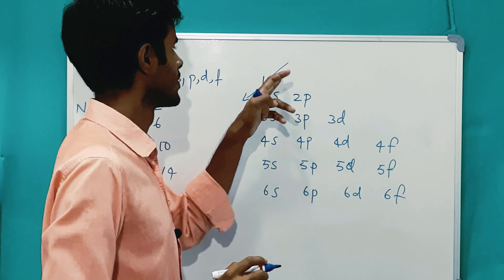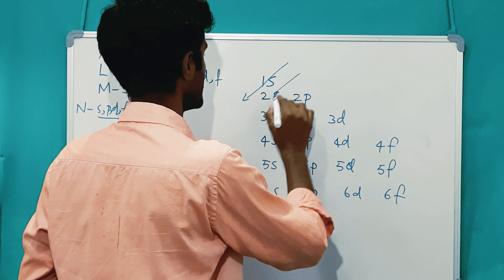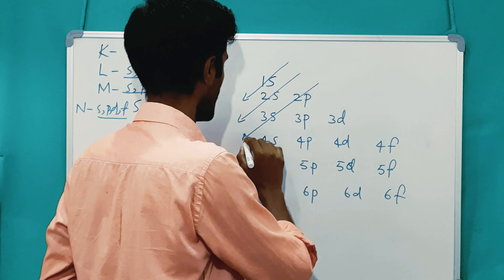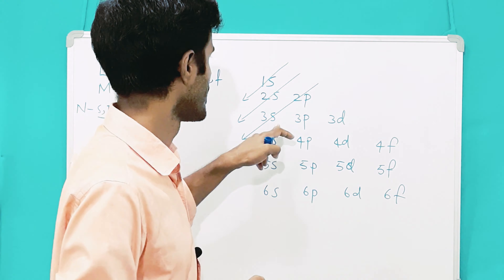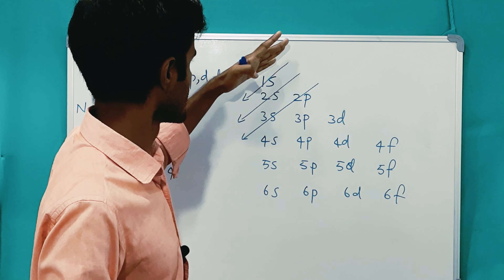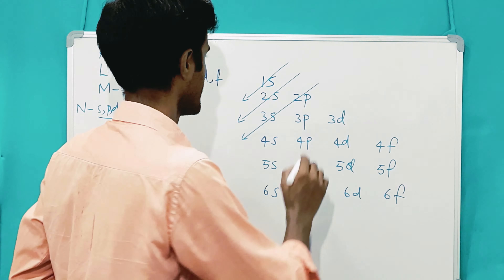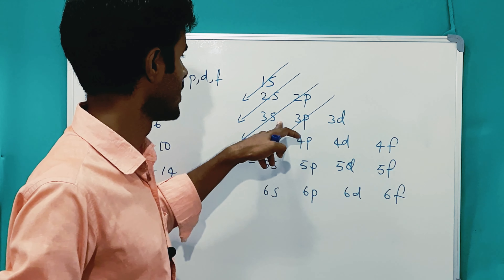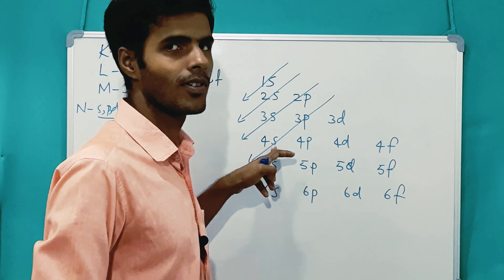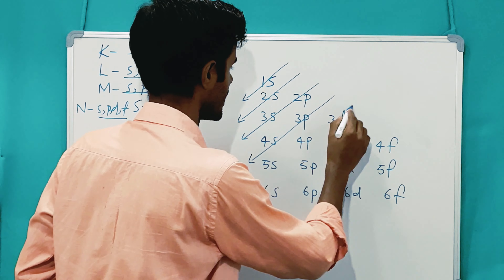To find the order, we draw diagonal arrows through the subshell list. The first arrow tells us the first electron fills the 1S orbital. The next arrow points to 2S, then back to 2P, then 3S. Remember this order by drawing parallel diagonal arrows. After filling 3S, we go to 3P, and after that we go to 4S — not 3D. So 4S has less energy compared to 3D.